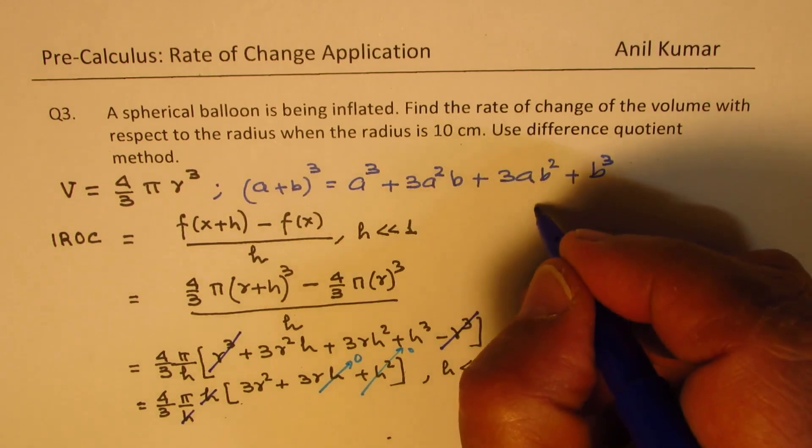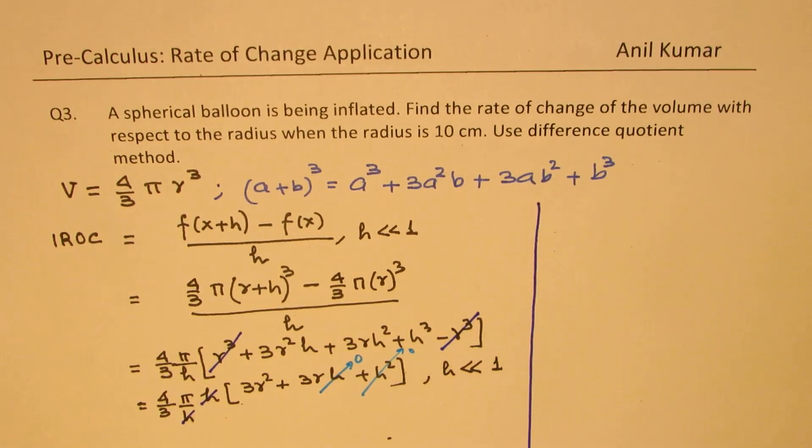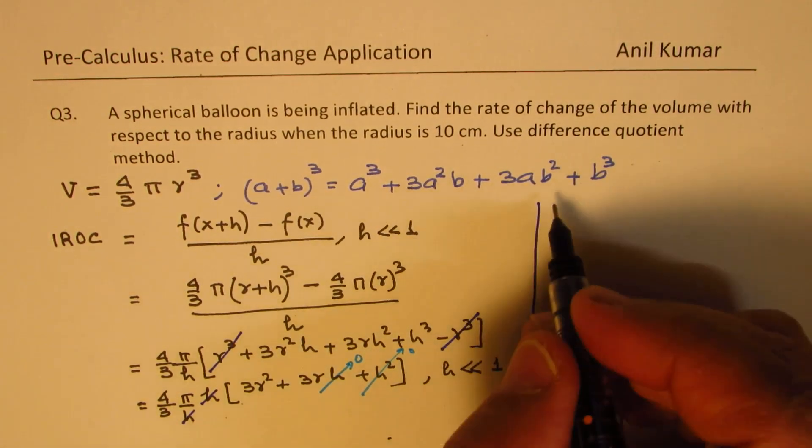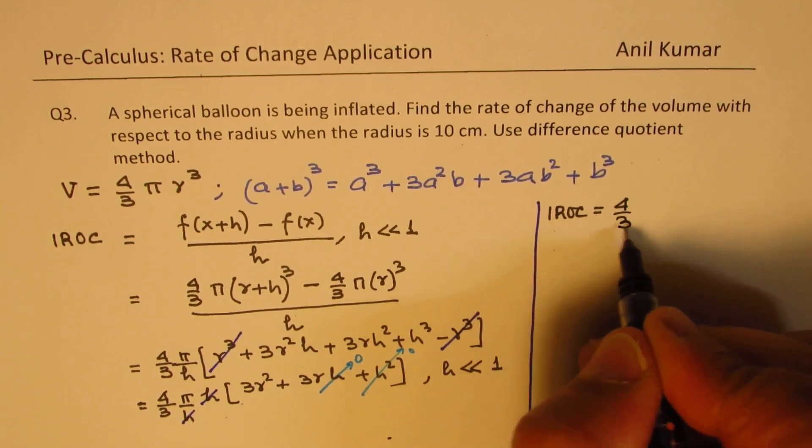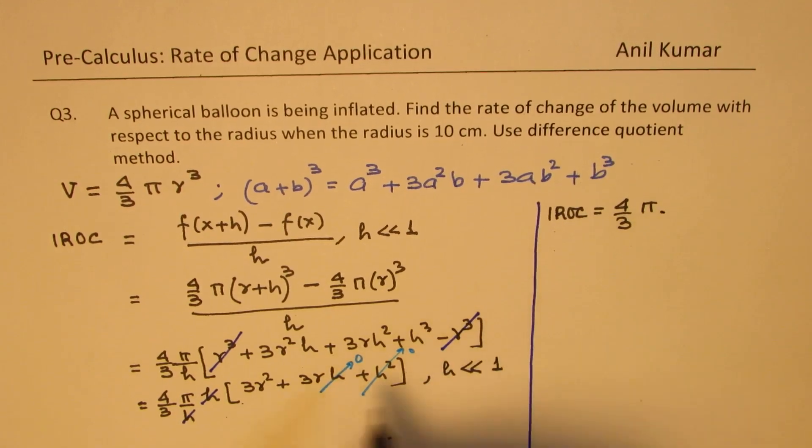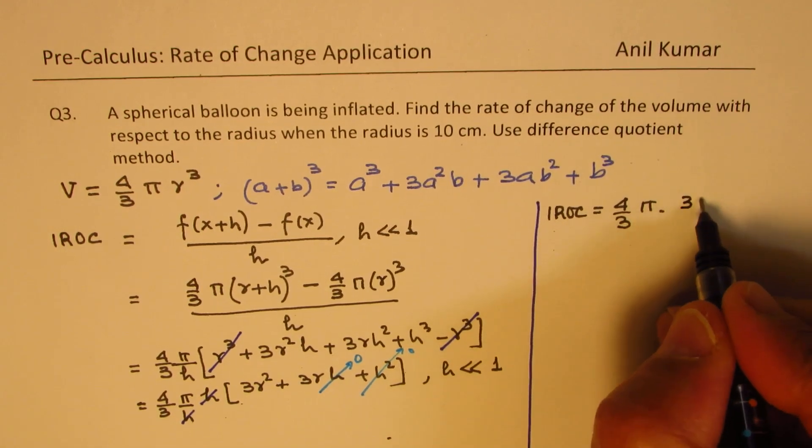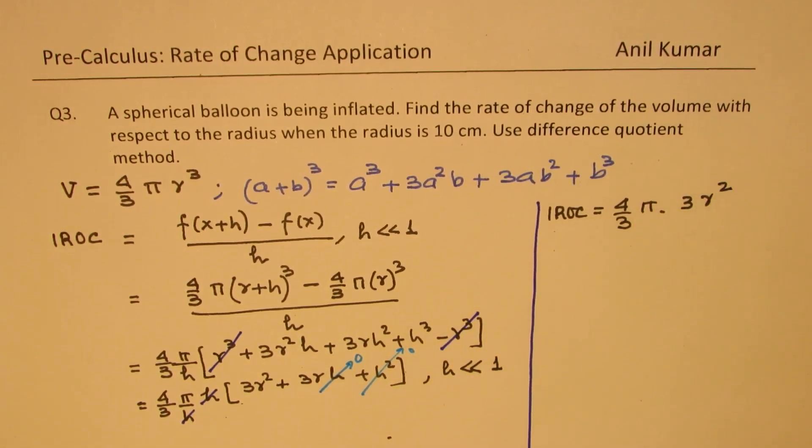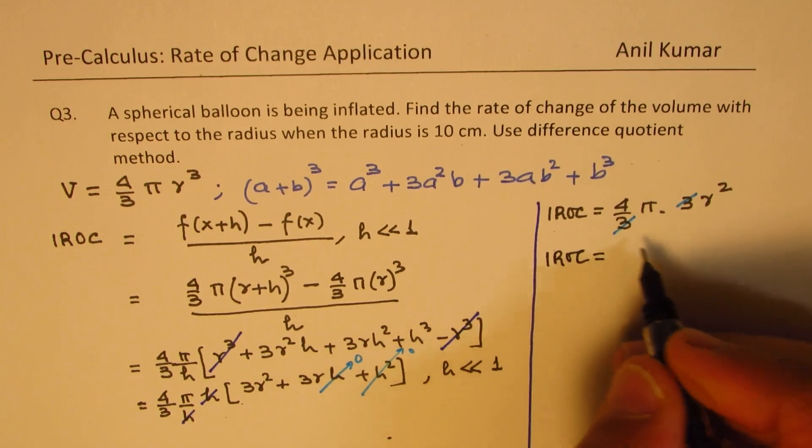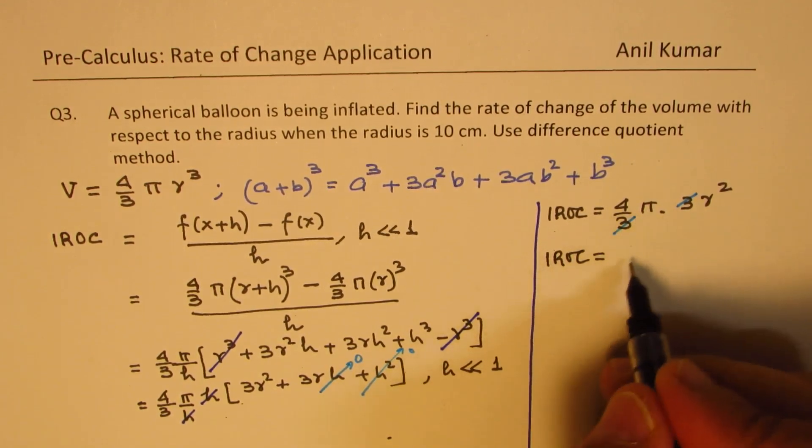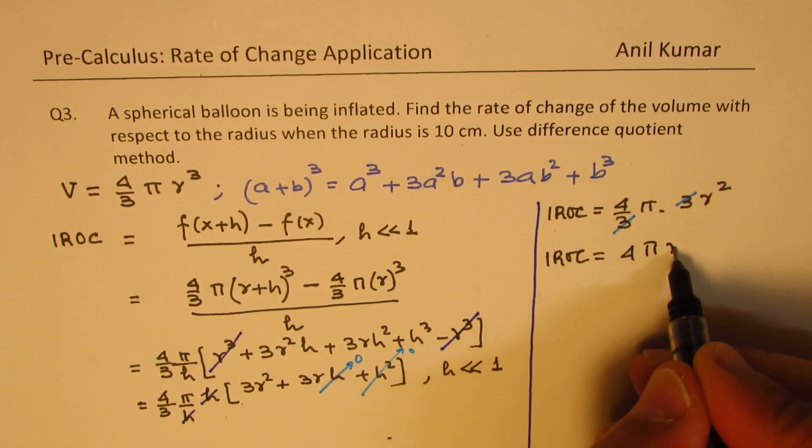We'll write this equation that instantaneous rate of change equals 4 by 3 pi, h have cancelled. And we have here 3 r square. So 3 and 3 will also cancel. So we get this instantaneous rate of change at any point will be 4 pi r square.